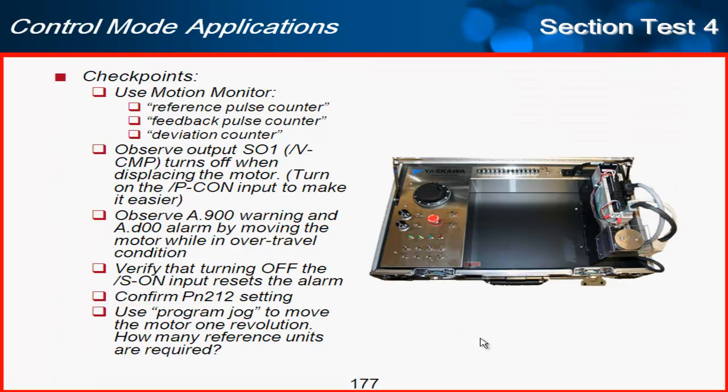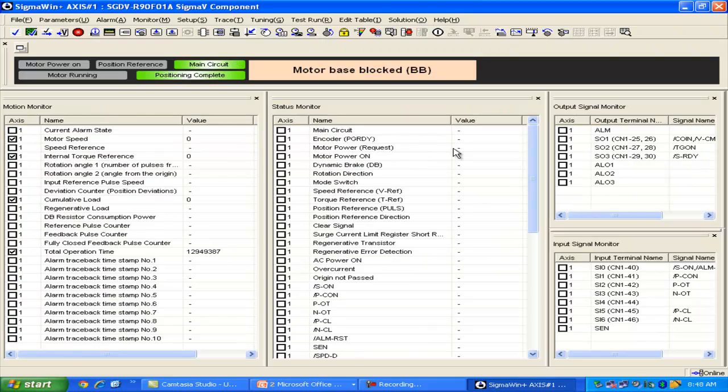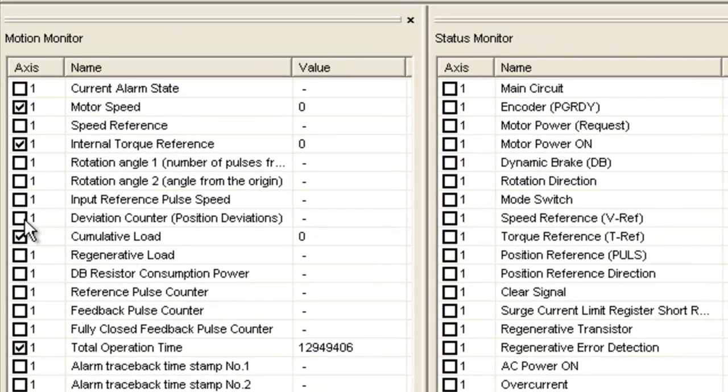So the first thing I can do here to check out this application is to use these monitors. Reference pulse, feedback and deviation. So let's go find those here. We've got the deviation counter, that's better described as the position error. There's the reference pulse counter, that's counting the pulses from the controller. And feedback is counting the encoder pulses, feedback from the motor.